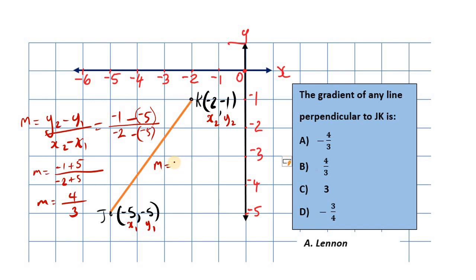So the gradient of JK is 4 thirds — not 4 fifths, my bad. Now, were we asked for the gradient of JK, or a line perpendicular to JK? If we needed a line parallel to JK, it would have the same gradient of 4 thirds — that would have been the answer for a parallel line.